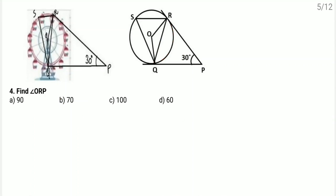Fourth question: find angle ORP. This is very simple. OR is the radius and RP is the tangent. You know the first theorem of circles — radius is perpendicular to the tangent through the point of contact. So this angle is 90 degrees. Simply option A is the correct one.